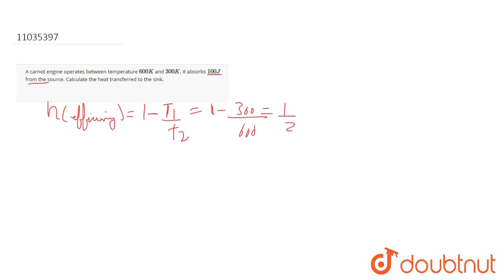That is, if it absorbs 100 joules from the source, the net work done will be only half of 100 joules. So eta equals work done by heat absorbed. This implies work done equals half into 100 joules.